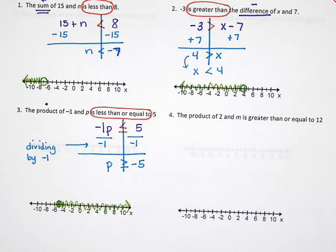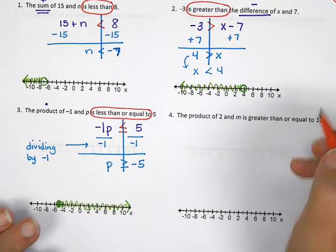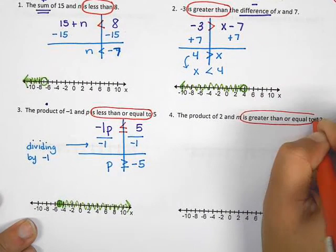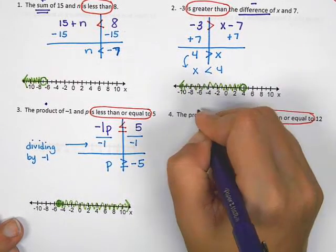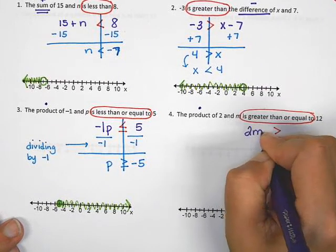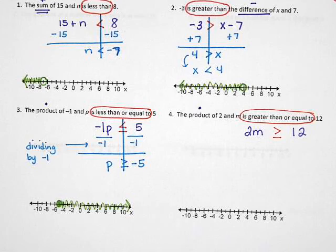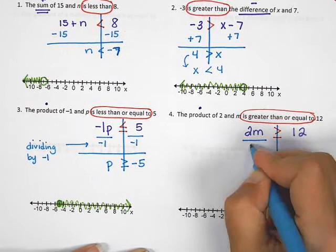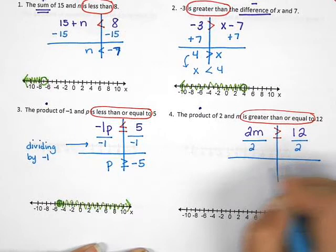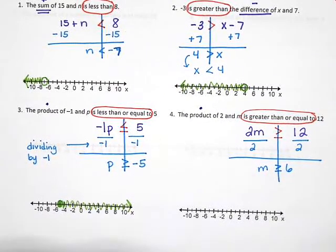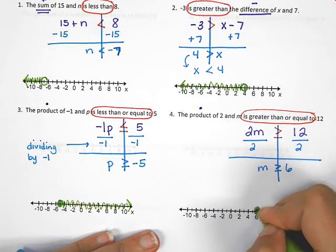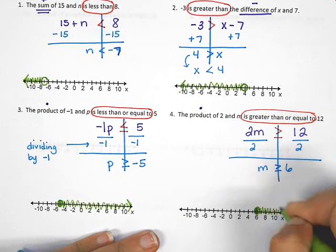In problem number 4, it says 'the product of 2 and m is greater than or equal to 12.' 'Is greater than or equal to' gives the symbol ≥. 'Product' means multiply, so 2m ≥ 12. To solve, I divide by 2 on both sides and get m ≥ 6. Then I put a closed circle on 6 and shade to the right.